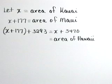Now that we've read the exercise, let's define our variables. Kauai is the smallest island, so let's let X represent the area of Kauai. We're told that Maui is 177 square miles larger than Kauai, so let's let X plus 177 represent Maui's area.